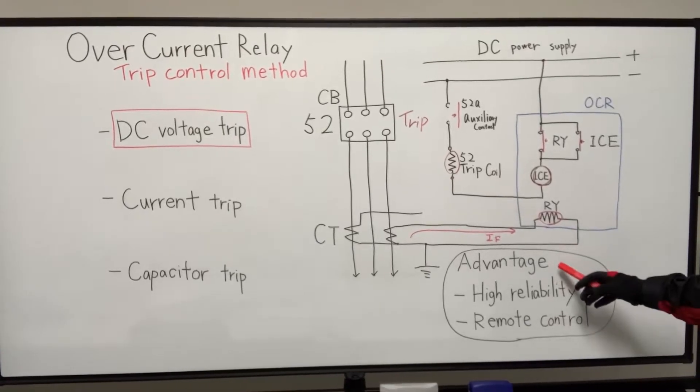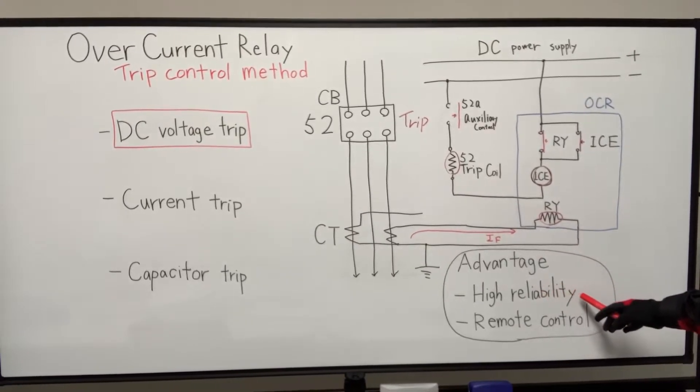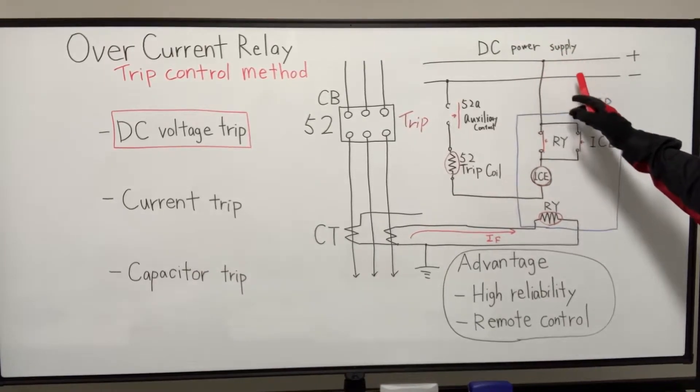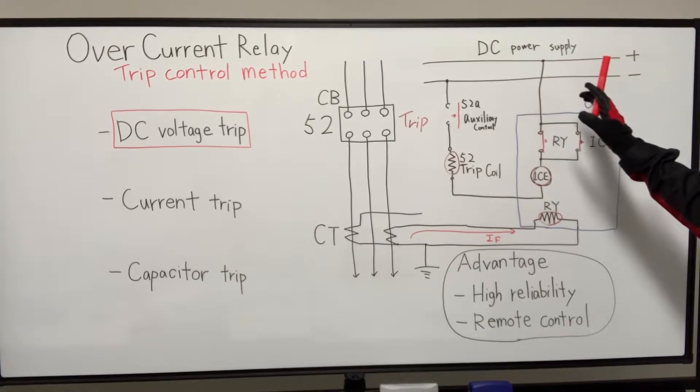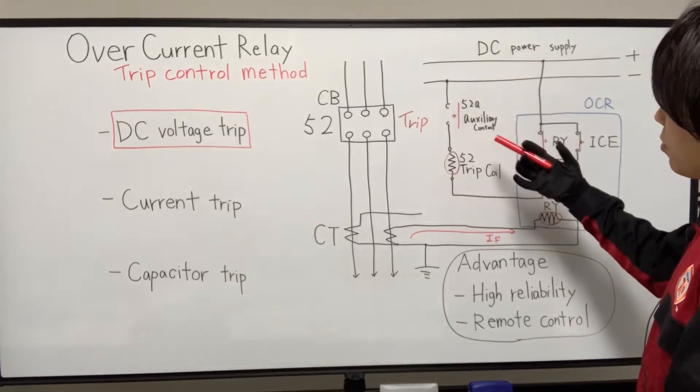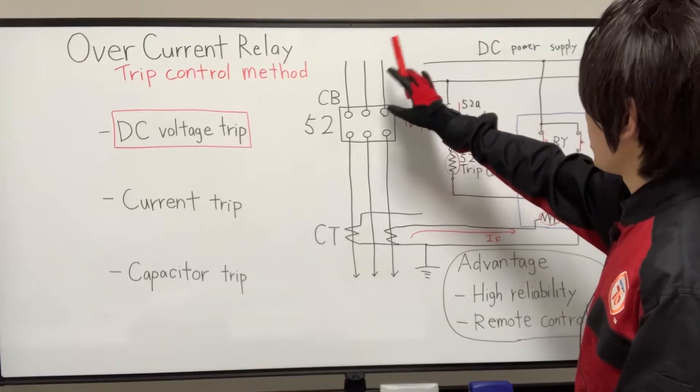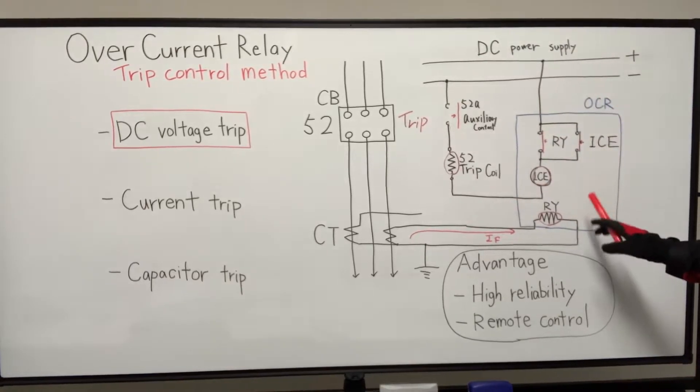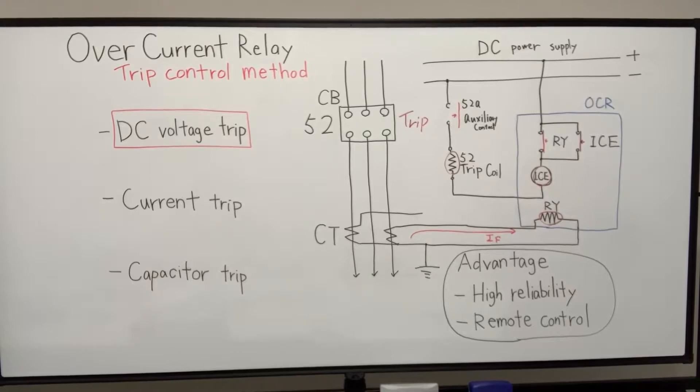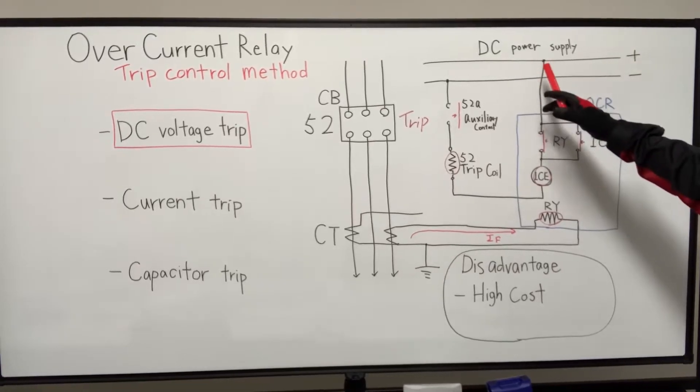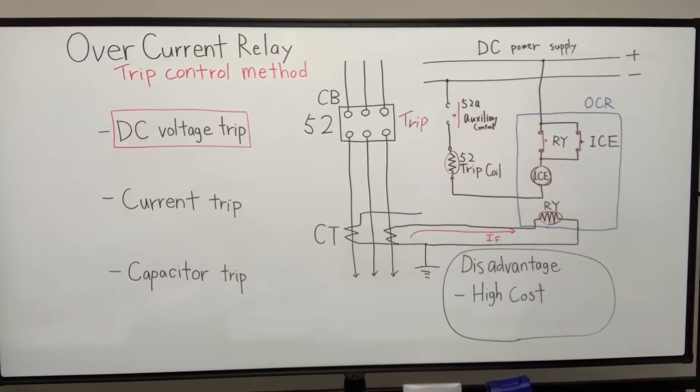So the advantage of this method is high reliability, thanks to this independent external DC power supply. Doesn't matter what happened in the power system side, like power voltage or voltage drop. That don't affect this control circuit side. So it's very high reliability. Also, remote control is possible. And disadvantage is high cost for installing external DC power supply.